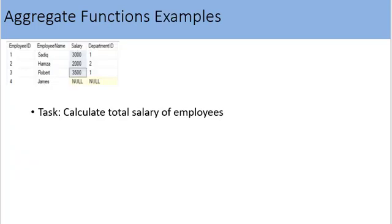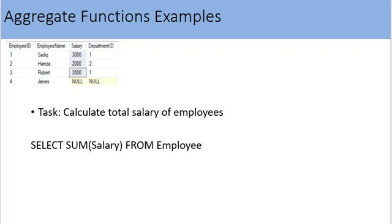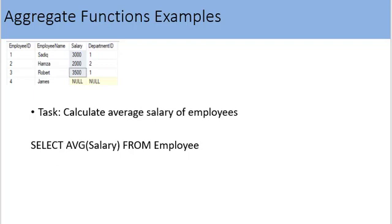Let's see aggregate functions in action with examples. Here is the employee table — it contains a salary column and we need to calculate the total salary of employees. The SELECT statement is: SELECT SUM(salary) FROM employee. When this query executes, it returns the sum of the salary column, which is 8500. To calculate average salary: SELECT AVG(salary) FROM employee. The output is 2833.33.